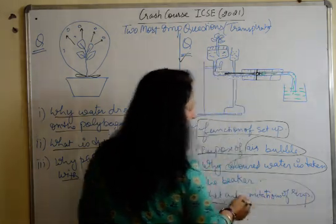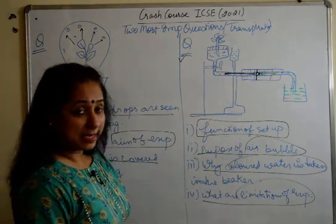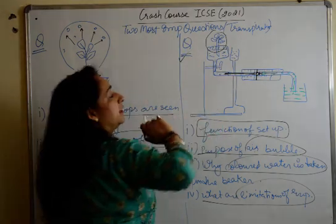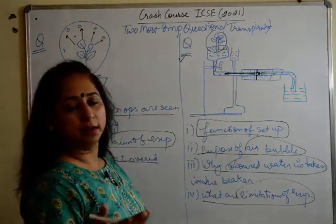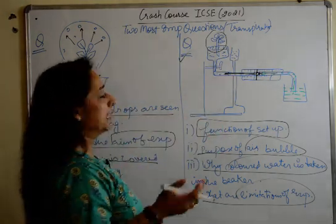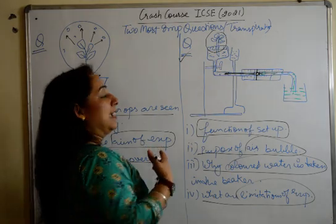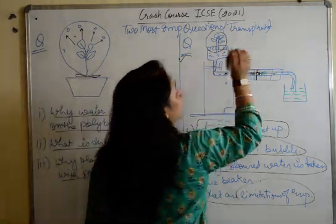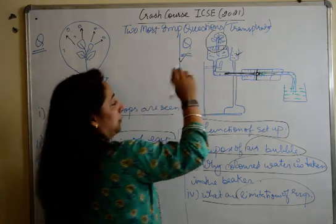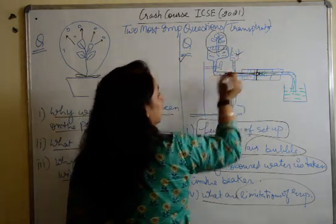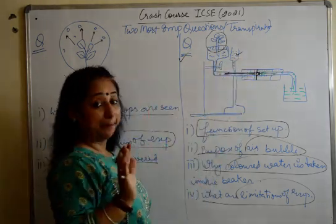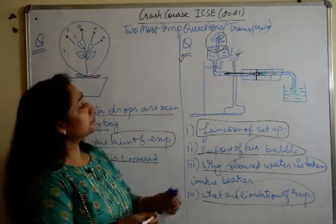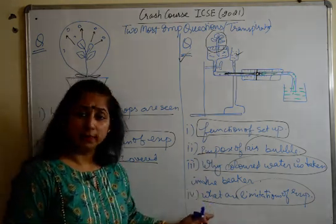What is the limitation of the experiment? The limitation is that the twig placed in the setup will not be alive for more than one or two days because it is continuously exposed to air. An additional question is: what is the purpose of the reservoir? It supplies water without disturbing the setup. These are a few questions related to the Ganong potometer.